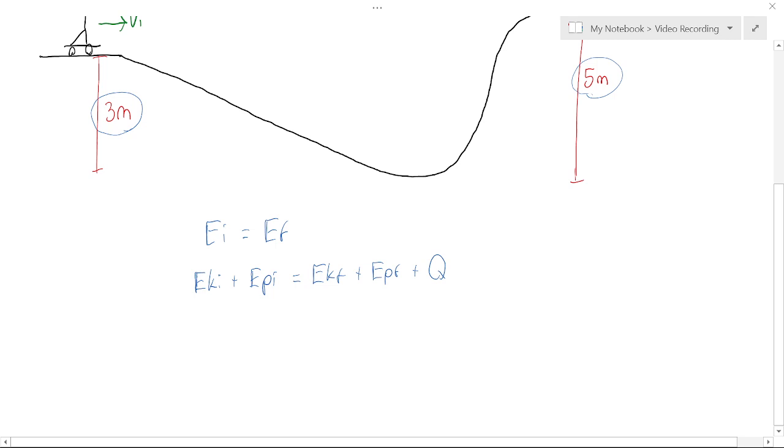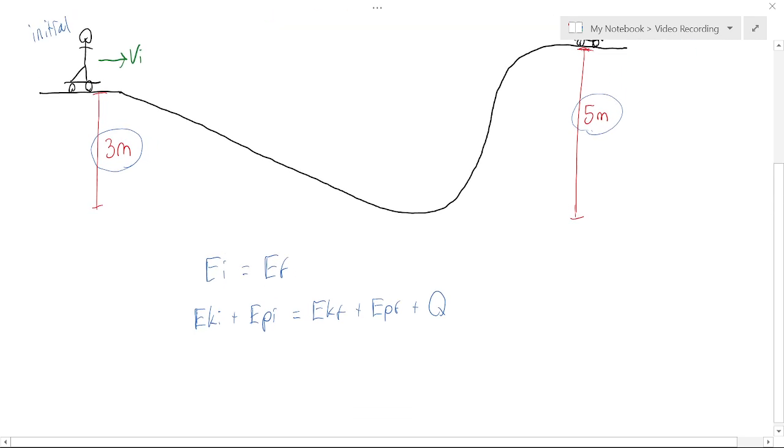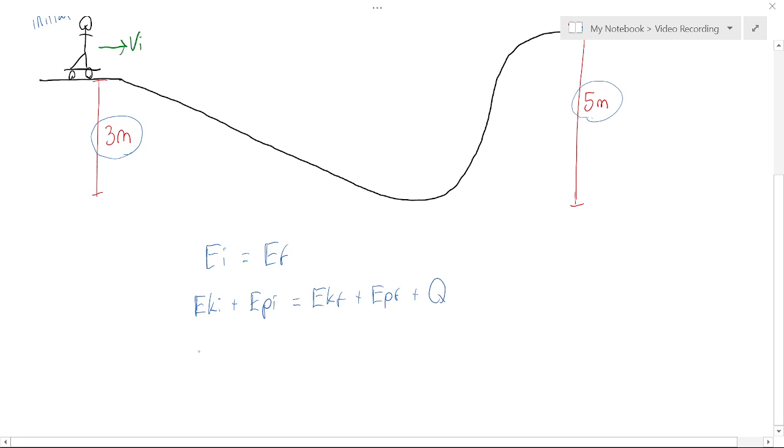Now, there is a trick we can do here. Actually, let's expand this a bit, and then I'll show you the trick. Kinetic energy is one-half mv squared. So we'll have kinetic energy initial is ½m(vi)². Potential energy is mghi for the initial potential energy.